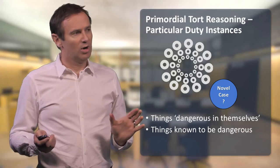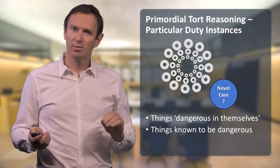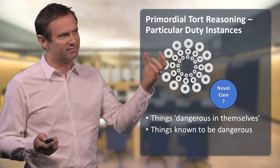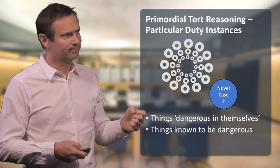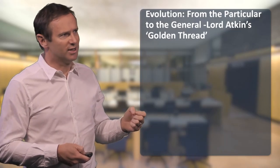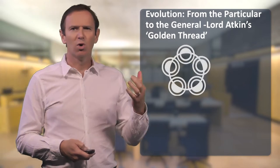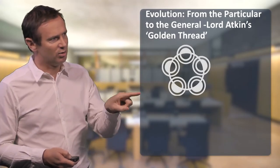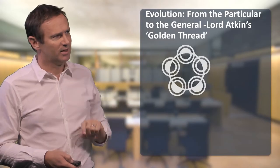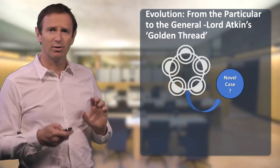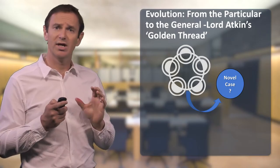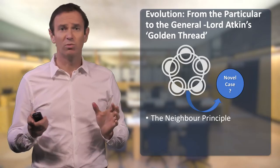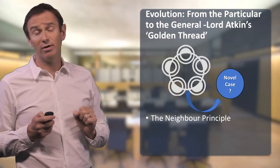How then is a court to decide a new case — something falling outside one of these little categories when the law is primordial, undeveloped, just a heap of particular instances? Lord Atkin's idea was this: he thought that there must be some golden thread, some common principle underlying the existing cases. And he thought that if one was able to extract a common principle from the various different instances, one could then use it to help decide the novel case. This common principle is now commonly referred to as the neighbour principle.